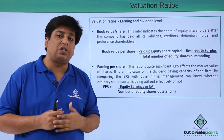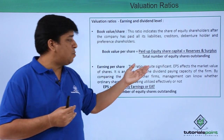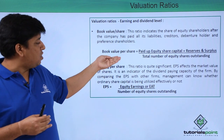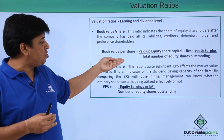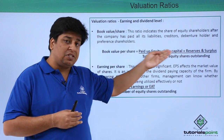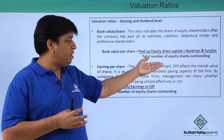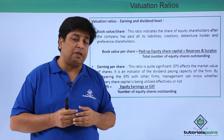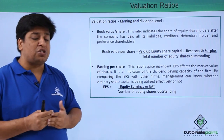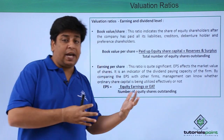Whatever shares have been issued by the company and are currently trading in the secondary market are known as total number of equity shares outstanding. So paid-up equity share capital plus reserves and surplus — everything that belongs to shareholders — divided by outstanding equity shares gives us the book value per share.